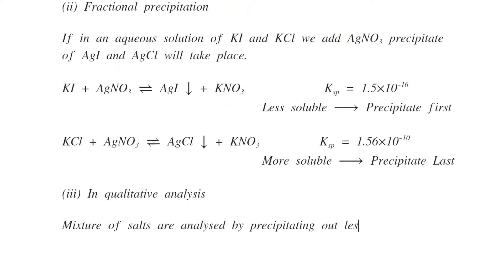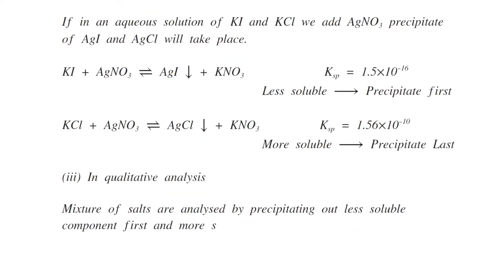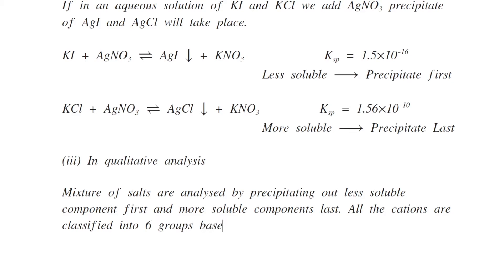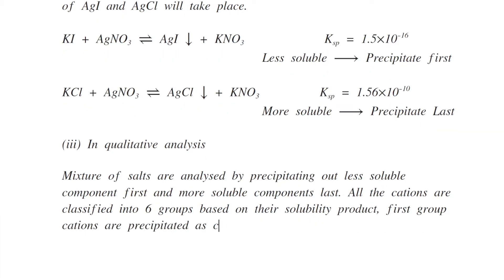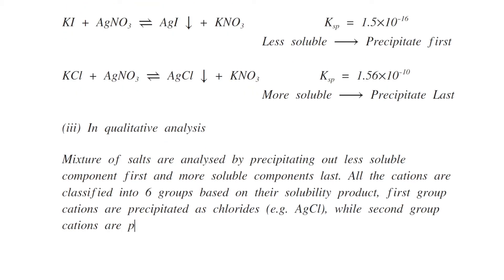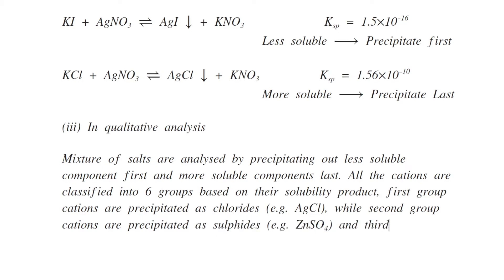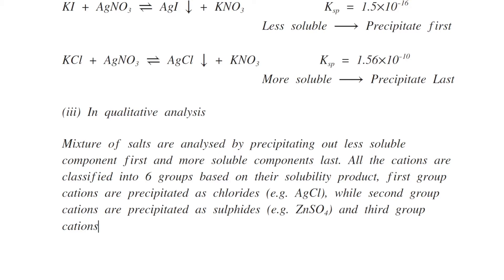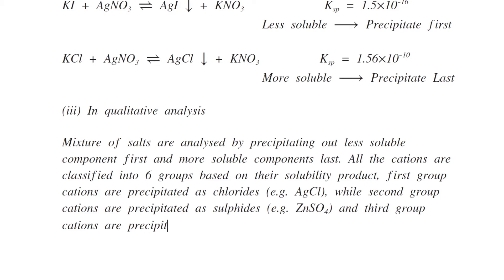All the cations are classified into six groups based on their solubility product. First group cations are precipitated as chlorides, for example silver chloride. Second group cations are precipitated as sulfides, as zinc sulfide. Third group cations are precipitated as hydroxides.